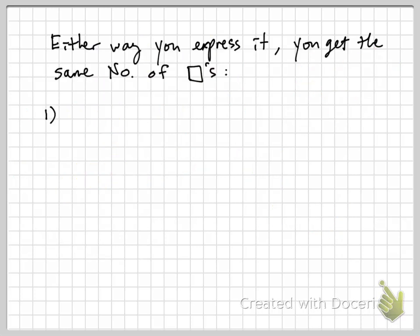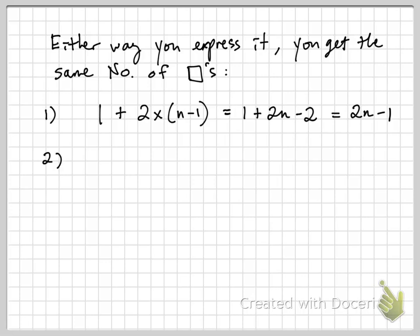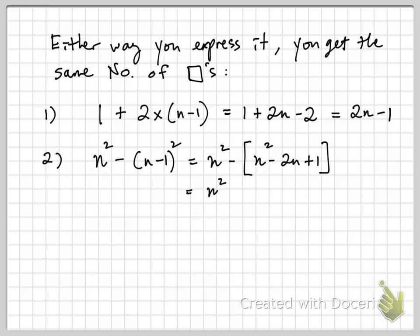We can verify this by simplifying both expressions. From the first formulation: 1 + 2(n−1) simplifies to 1 + 2n − 2, which further simplifies to 2n − 1. From the second formulation: n² − (n−1)² expands to n² − (n² − 2n + 1), which simplifies to n² − n² + 2n − 1. The n² terms cancel, leaving 2n − 1. By simplifying both expressions, we arrive at the same result of 2n − 1, meaning regardless of how you visualize it, you always get the same number of squares.